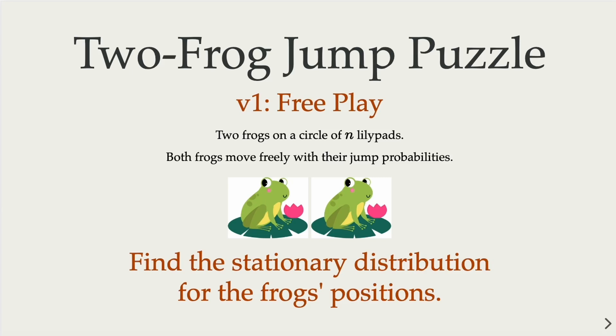This is the follow-up of the frog jumping puzzle. Here we're dealing with two frogs. The setup here is going to be a circle of n lily pads, and both frogs will move freely with certain jump probabilities.